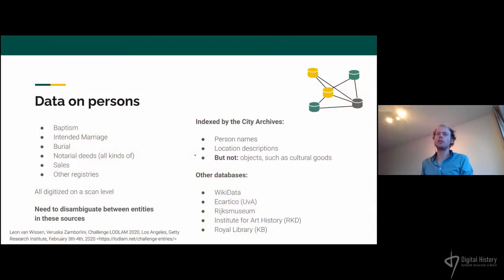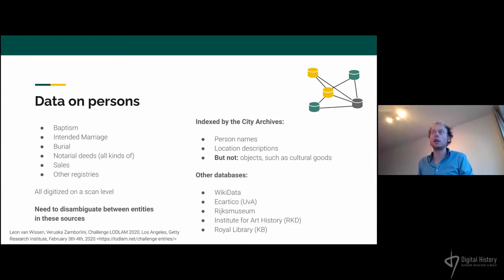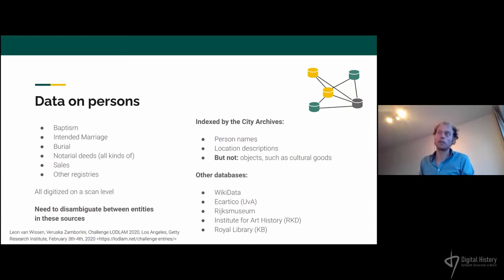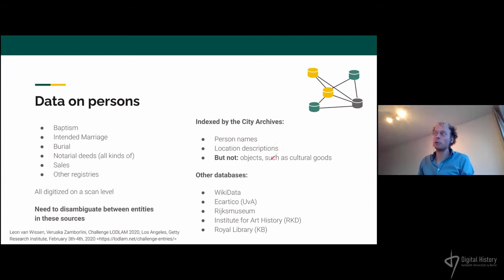Looking at the data we have on persons, from the archives we have indices on baptism, marriage, burial, as well as notarial deeds and smaller ones on estates and ships. These are at least all digitized at scan level. Some have index data with limited information on person names and location descriptions, but never information on the objects described — such as the cultural objects we saw.